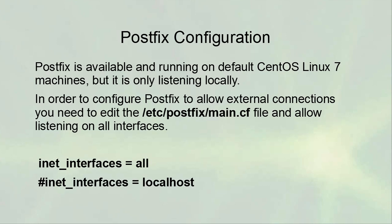To configure Postfix to allow external connections, you need to edit the /etc/postfix/main.cf file to allow listening on all interfaces. Scroll through the file to find a section with four lines. Uncomment the line that says 'inet_interfaces = all' and comment out the line that says 'inet_interfaces = local'. When you uncomment it, make sure you just remove the hash mark — don't remove trailing spaces or the line won't work.